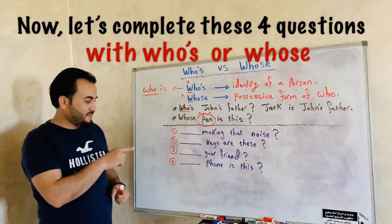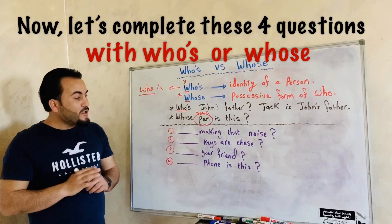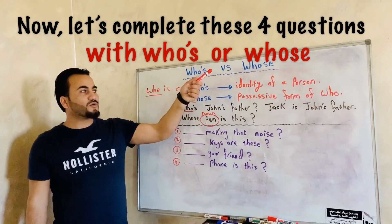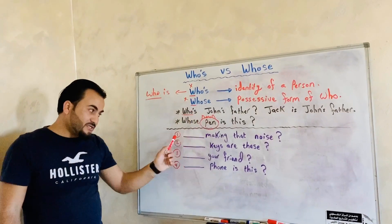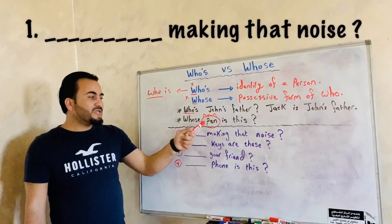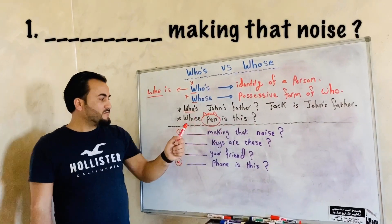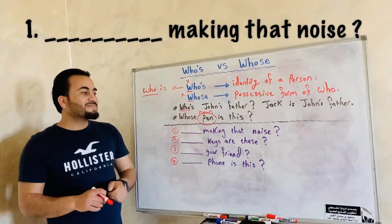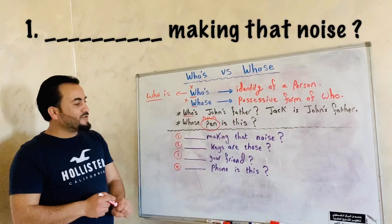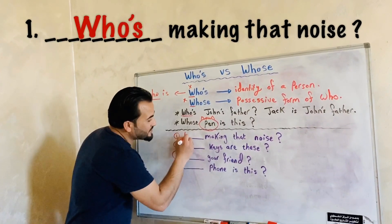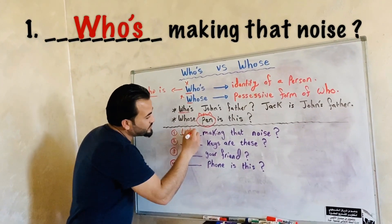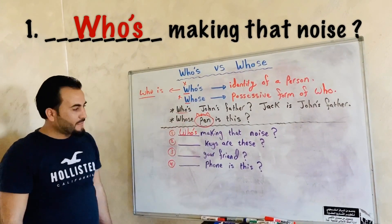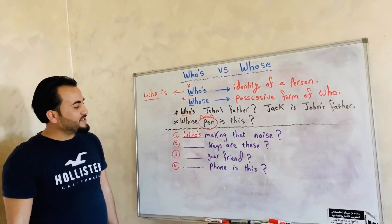I have here four questions. We are going to complete them with whose or whose. The first question: blank making that noise — what do you think? Whose, meaning who is making that noise. Who is making that noise? Bob is making that noise.